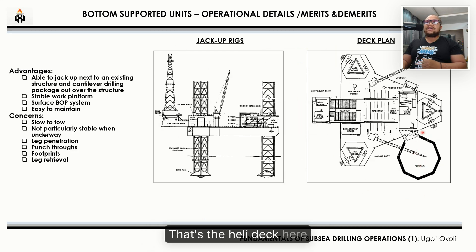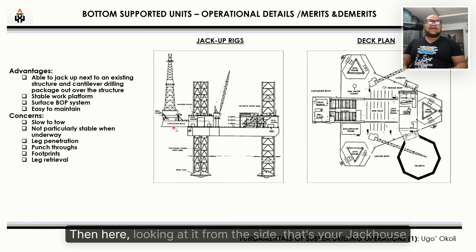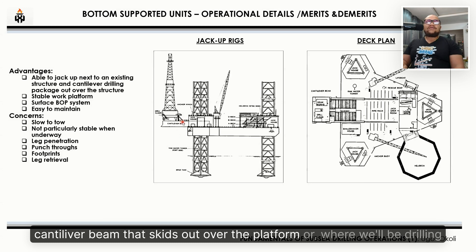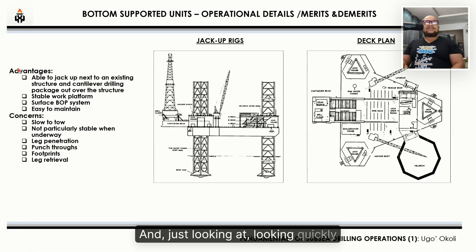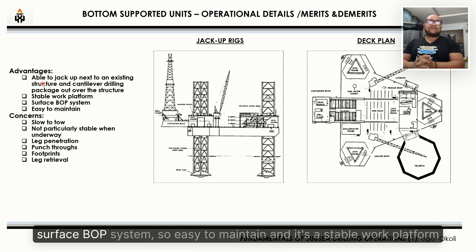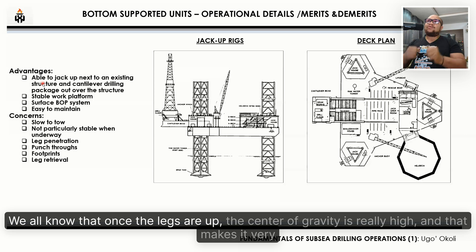A typical jack-up rig deck plan includes a helideck, cranes, and a jack house where the legs are raised and lowered. Viewed from the side, you can see the jack house, spud cans, drill floor, and a cantilever beam that skids out over the platform for drilling. Advantages include the ability to position the cantilever over an existing structure, a surface BOP system that is easy to maintain, and a stable work platform that sits on the seabed.